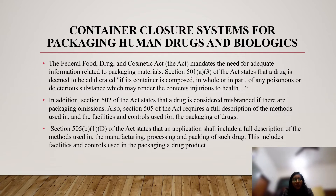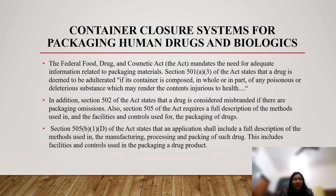The next guidance covers container closure systems for packaging human drugs and biologics. The Federal Food, Drug, and Cosmetic Act mandates adequate information related to packaging materials. Section 501 of the Act states that a drug is deemed adulterated if its container is composed in whole or in part of any poisonous or deleterious substance which may render the contents injurious to health. Section 502 states that a drug is considered misbranded if there are packaging omissions. Section 505 requires a full description of the methods used in, and facilities and controls for, packaging of drugs.